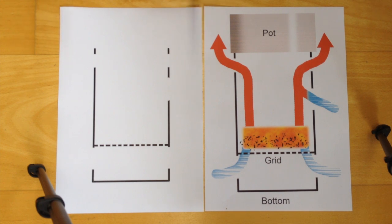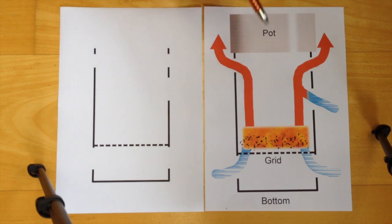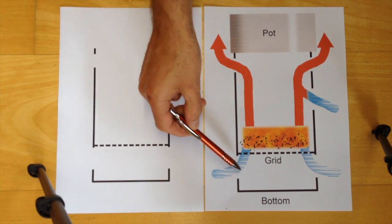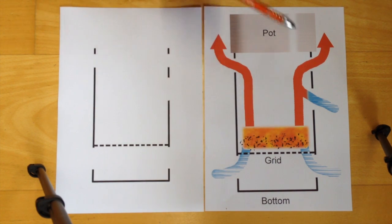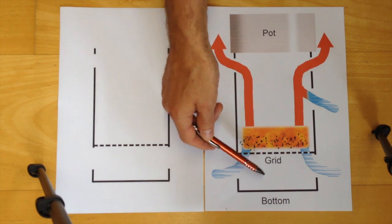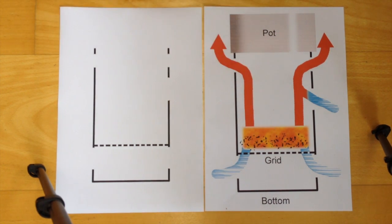Secondly, you need some ventilation holes where the air can get in so the fire has enough air. Those should of course be below the grid so that the air can get through the grid and really reach the fire.